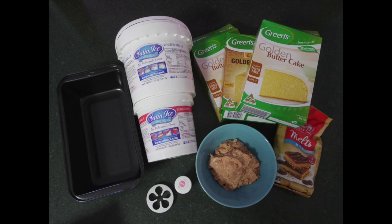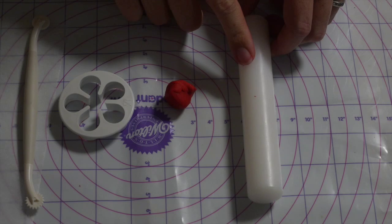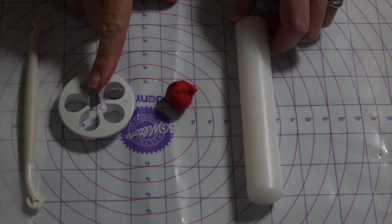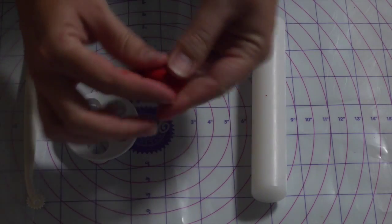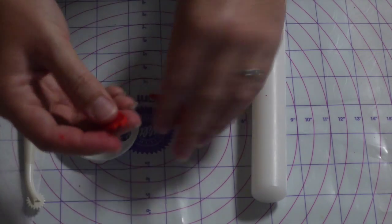First we need to make our roses using a rolling pin, some red fondant, our rose petal cutter, and a little rotary cutter. Start by taking a small ball of the red fondant, roll it into a nice ball.